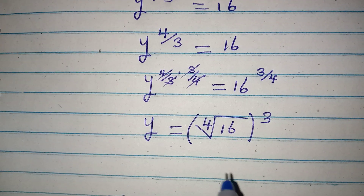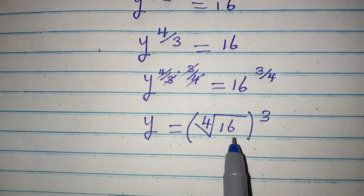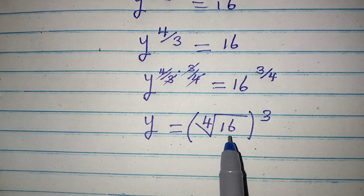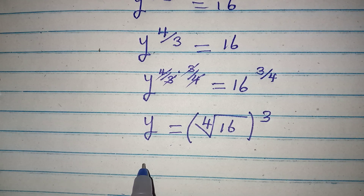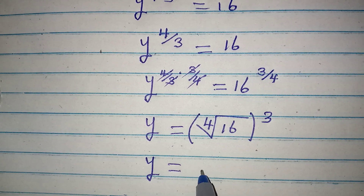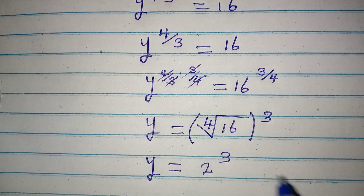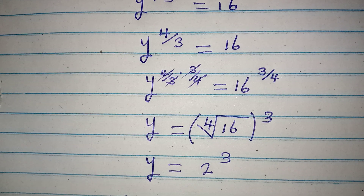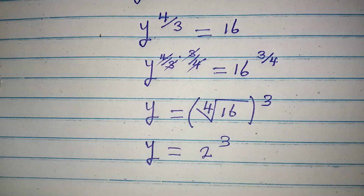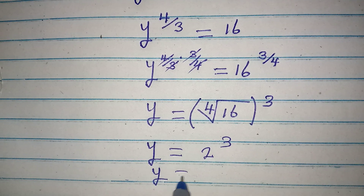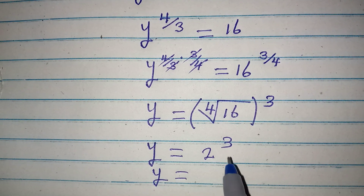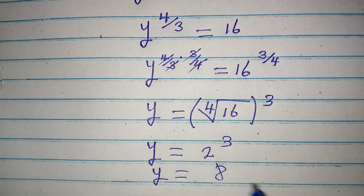3 will go with 3, 4 will go with 4, and then y is equal to 16 to the power of 3 over 4. And that means we are looking for the fourth root of 16, and whatever we have is then raised to the power of 3. What number do you multiply by itself 4 times to get 16? The number will be 2. So y is equal to 2 to the power of 3, and it is 8.